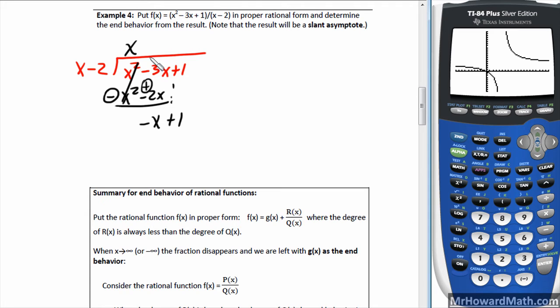X, what times x gives me negative x? That would be a minus 1, negative x here, negative 1 times negative 2 is a positive 2. And then we subtract, so this flips to a minus, 1 minus 2 is negative 1. So nothing left to bring down, so that's my remainder.